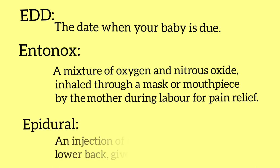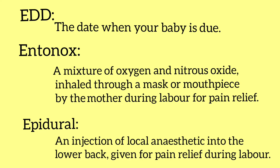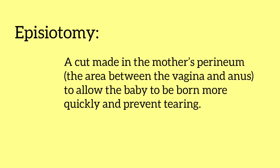Epidural is an injection of local anaesthesia into the lower back for pain relief during labor. Episiotomy is a cut made in the mother's perineum — the area between the vagina and anus — to allow the baby to be born more quickly and to prevent tearing.